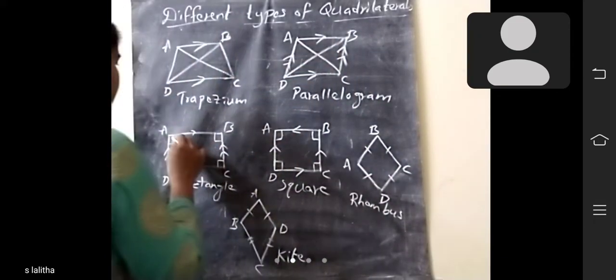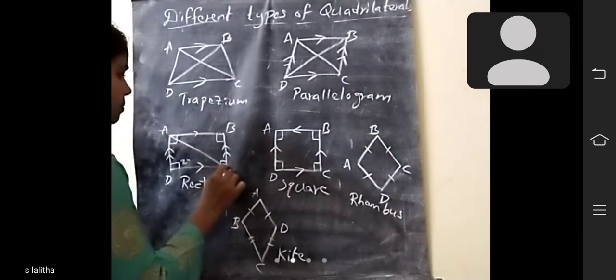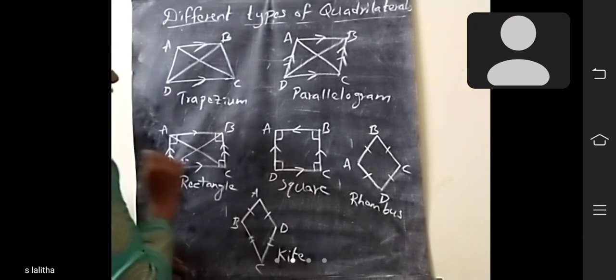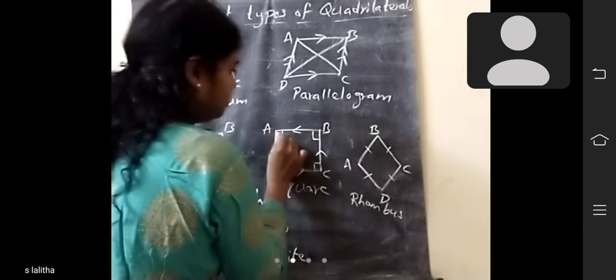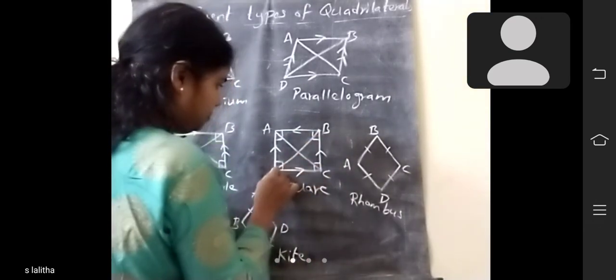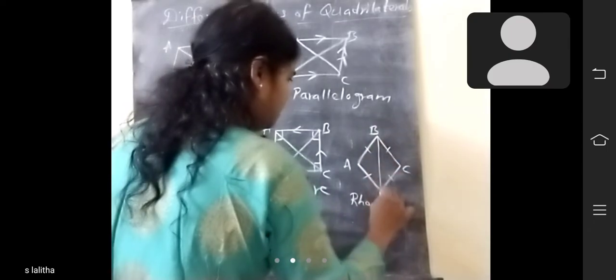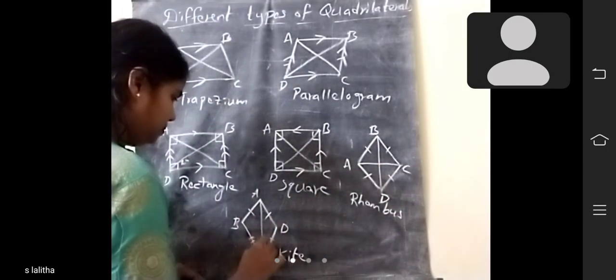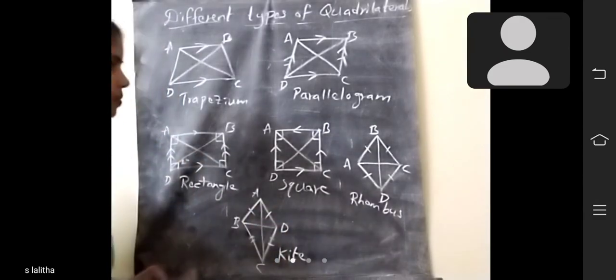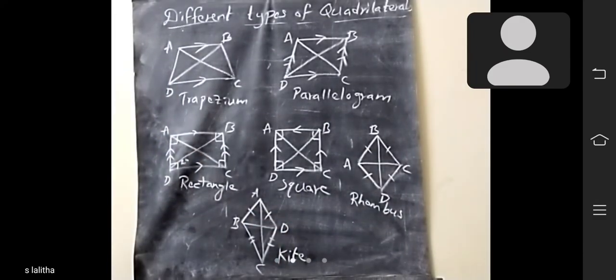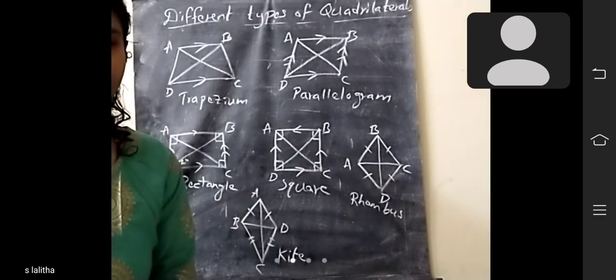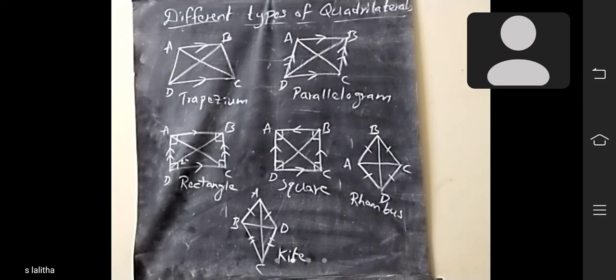Two diagonals here also, two diagonals. This is all about different types of quadrilaterals. Any doubts, children? All right.